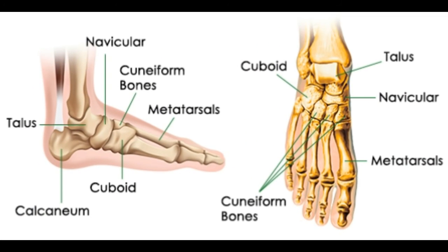When one looks at the anatomy of the foot, they would realize that the foot has a complex mechanical and structural architecture. The ankle joint is the shock absorber of the foot. Apart from 28 bones and 33 joints, muscles, ligaments, and about a hundred foot tendons make up the foot.